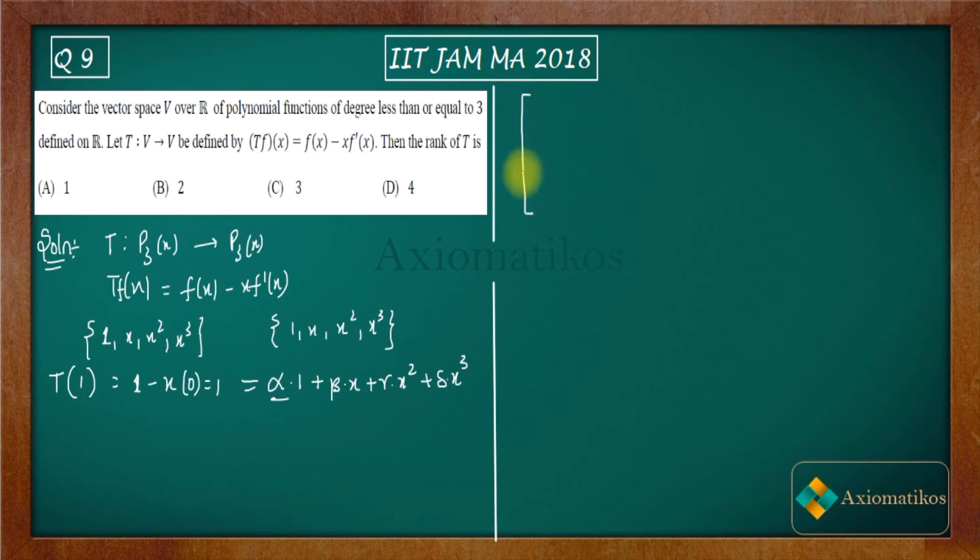See, in the matrix of T, the transformation T, the values of α, β, γ, and δ are treated as the column vectors. So you got α = 1, β = 0, γ = 0, δ = 0. So this is your column 1. In order to determine column 2, find out image of x. It will be x - x·f'(x) = x - x·1, so you will get 0. So this column will be completely zero.